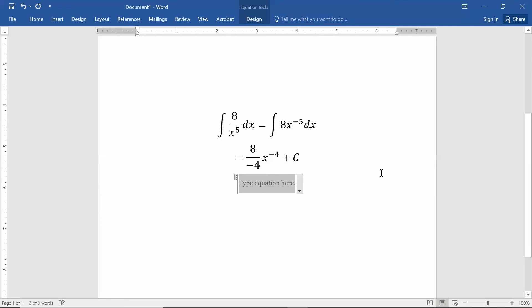If you'd like to simplify this, this would be -2 times x^(-4) + C if I wanted to use negative exponents. If I want to use positive exponents, we would take -2 divided by x⁴. I like to put the negative in front of the 2, plus C.